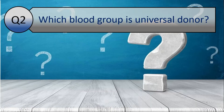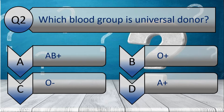Your second question is: which blood group is the universal donor? Your options are A. AB positive, B. O positive, C. O negative, and D. A positive. And the correct answer is O negative.